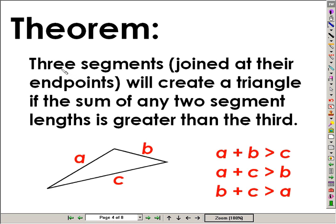The theorem is three segments joined at their endpoints will create a triangle if the sum of any two segment lengths is greater than the third side. So the sum of two sides must be greater than the third side. So in this case, a plus b greater than c, or b plus c greater than a, or a plus c greater than b. All of these possibilities must be true in order to make a triangle.